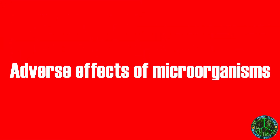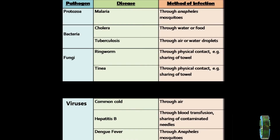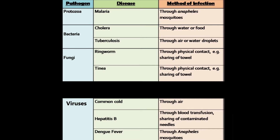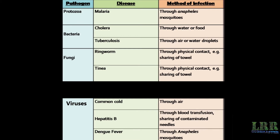Adverse effects of microorganisms — diseases caused to humans: malaria is caused by a type of protozoa and spreads through mosquitoes. Cholera is a type of bacteria spread through water and food. Tuberculosis is also caused by bacteria. Ringworm and tinea are caused by fungi, spread through physical contact such as sharing towels. Cold is caused by a virus and spreads through air. Hepatitis B is a virus transmitted through blood transfusion.